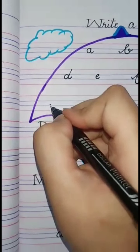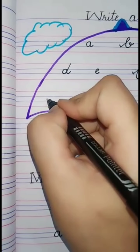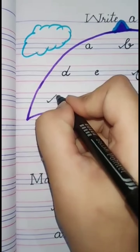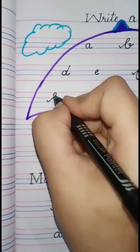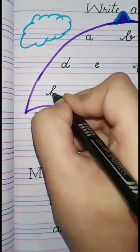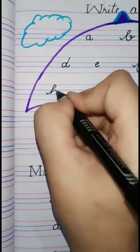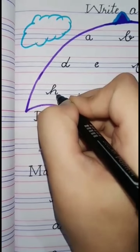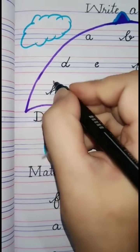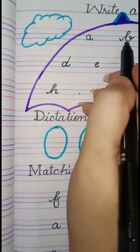Next is ha. Firstly you make a tick, curve down, cut it on the second line, then make a curve and leg out, like a ba.